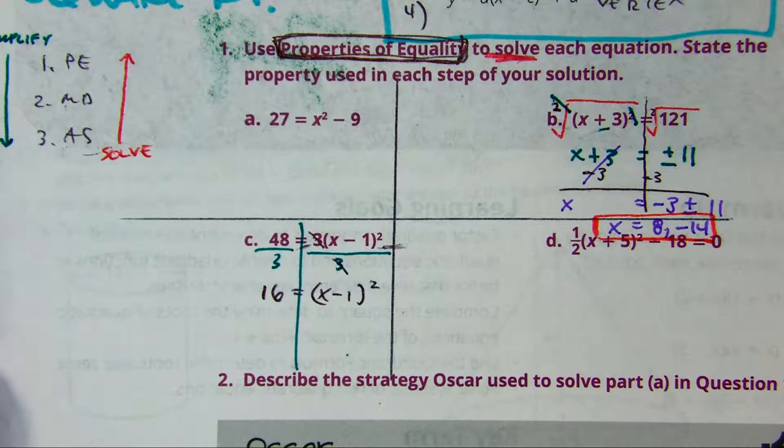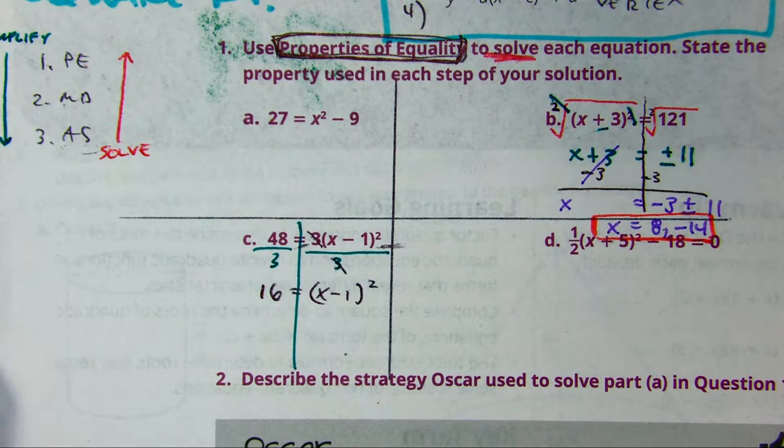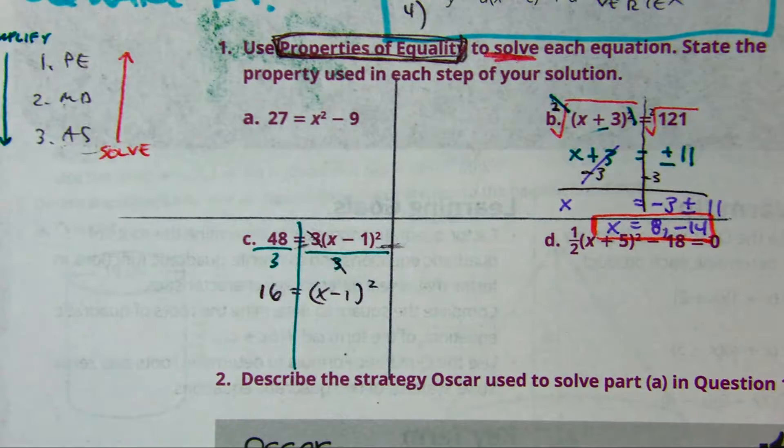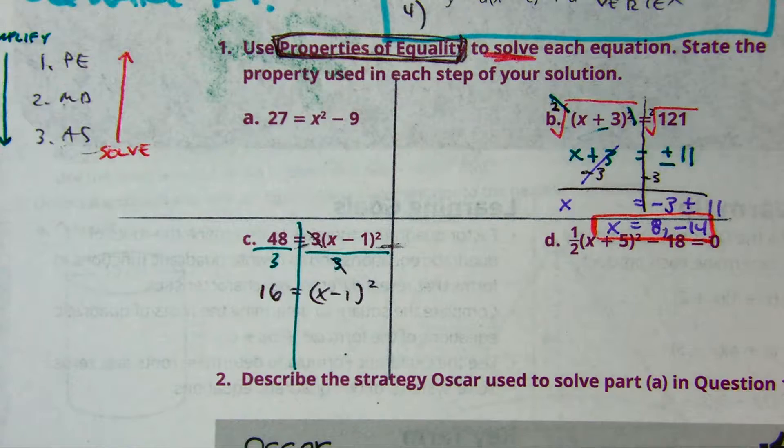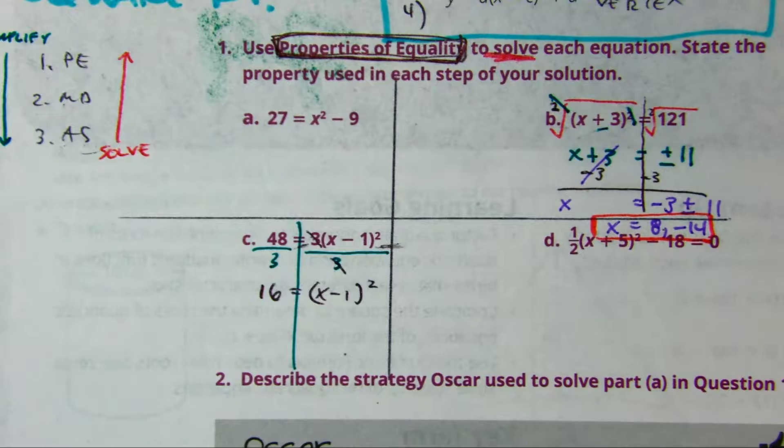Partner A, tell partner B what's the next step. Ready, set up. Ariana, what's the next step? Natalie R, what's the next step? Ariana, what's the next step? Square root. That's correct. Natalie, what's the next step? What is it? We need to take the square root of both sides.